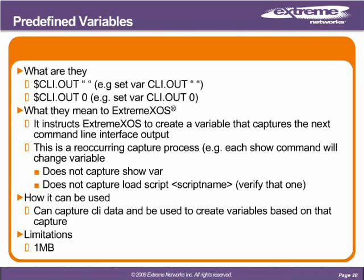CLI.out is set with either set var CLI.out with double quotes, or set var CLI.out with a zero. It instructs EXOS to create a variable that captures the next command line interface output. It will continue to do that and it's reoccurring, and it's a volatile command. It doesn't capture the show var, and it doesn't capture load script with a script name. It can be used to capture CLI data to create variables based on that capture, and has a limitation of one megabyte.